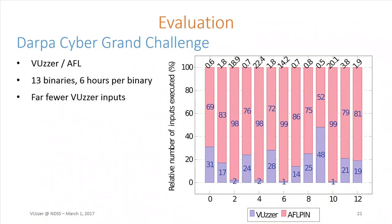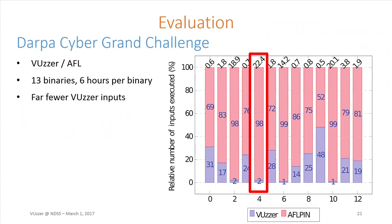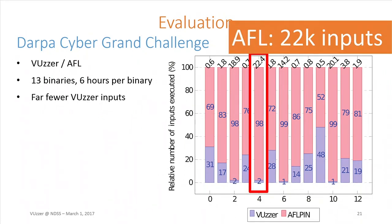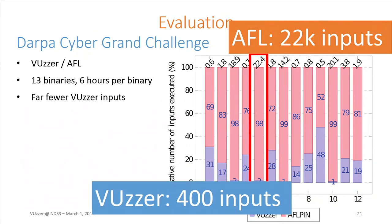We evaluated VUzzer on several datasets. The first was the DARPA Cyber Grand Challenge. We compared VUzzer against AFL and found that out of a large set of binaries, there were 13 binaries where both VUzzer and AFL were able to trigger a crash. In general, VUzzer was able to use much fewer inputs to crash the binary. In this particular example, AFL required 22,000 inputs while VUzzer was able to crash the binary after only 400 inputs.